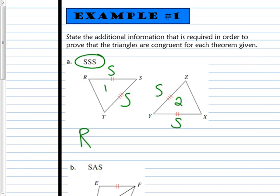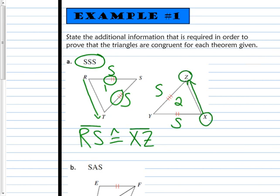So what we need is RS is congruent to XZ. And notice, I went from R to S, I went from the side that has the 2 to the side that has the 3. So over here, I have to go from X to Z, from the side that has the 2 to the side that has the 3. And make sure they're in the right order.